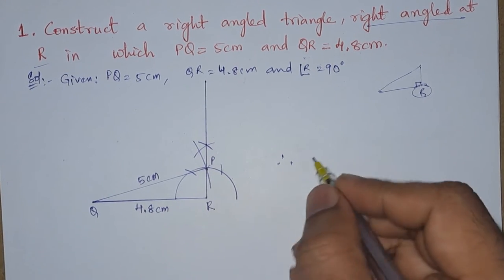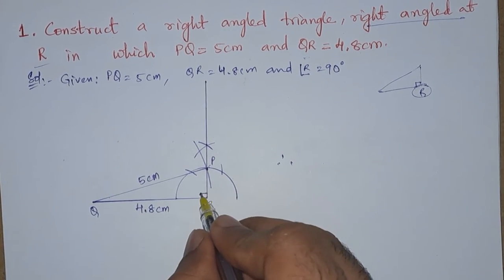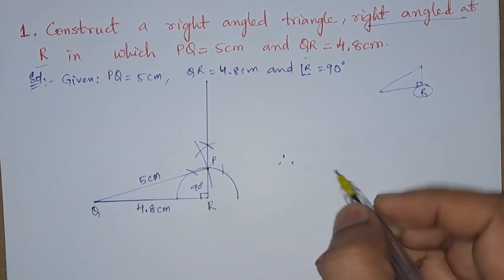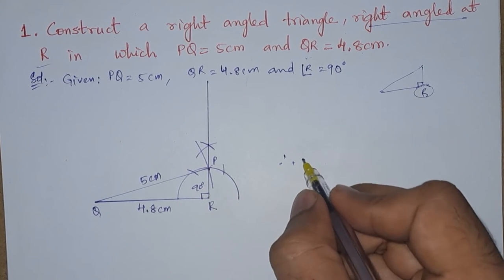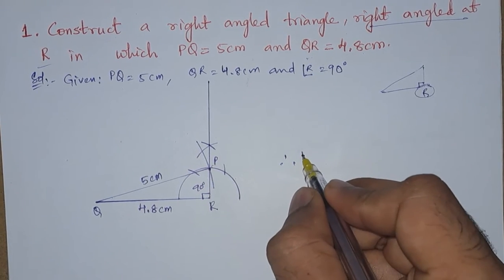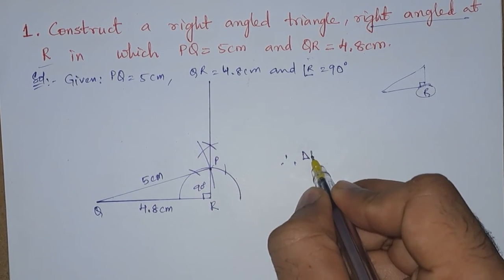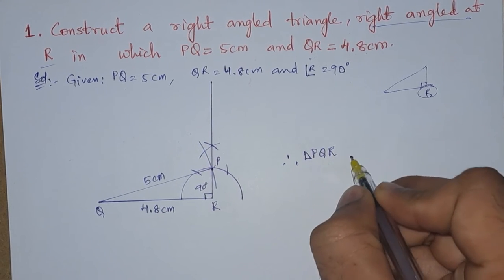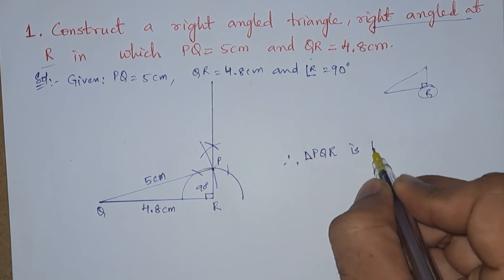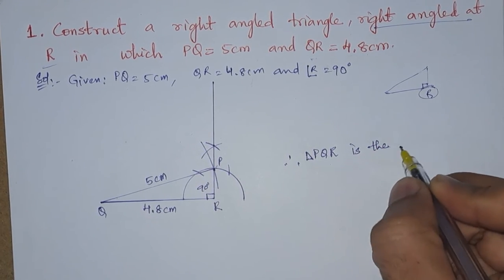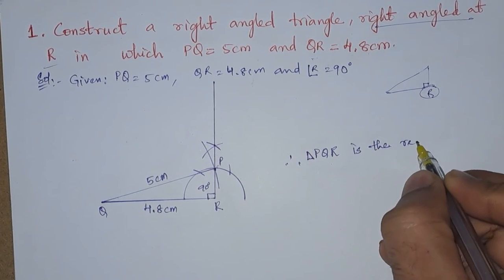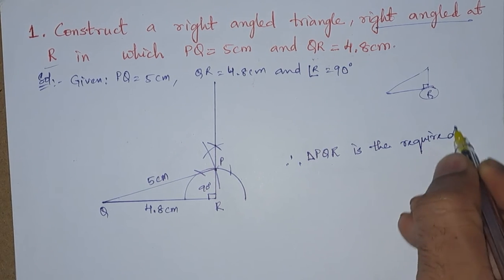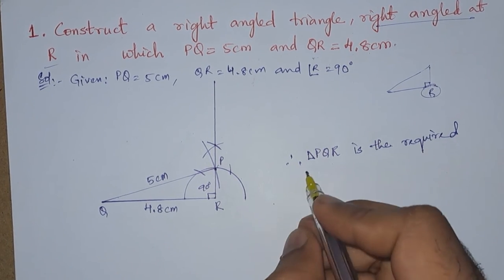Therefore, triangle PQR is the required right-angled triangle.